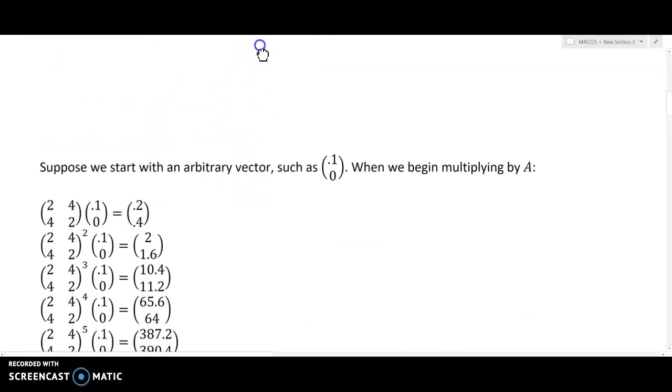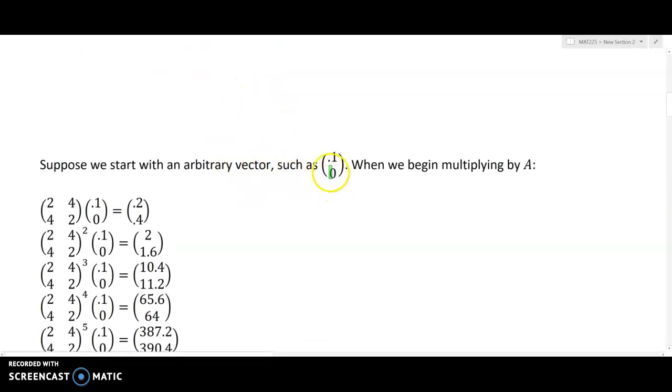So what happens if we take something that's not an eigenvector? So I've just picked an arbitrary vector here, 0.10, that's obviously not an eigenvector, the two components are not the same nor are they opposite signed. So when we begin multiplying by A, so let's say we multiply it by A once, we get the vector 0.2, 0.4. If we multiply 0.2, 0.4 by the same matrix, that's the same thing as just squaring the A matrix. Recall that this is really just saying A times A times our initial vector, I'll just call that x0.